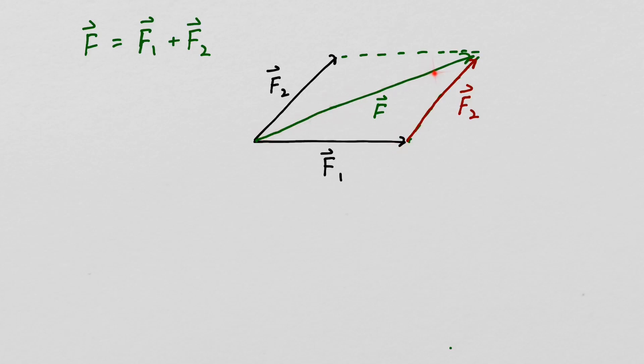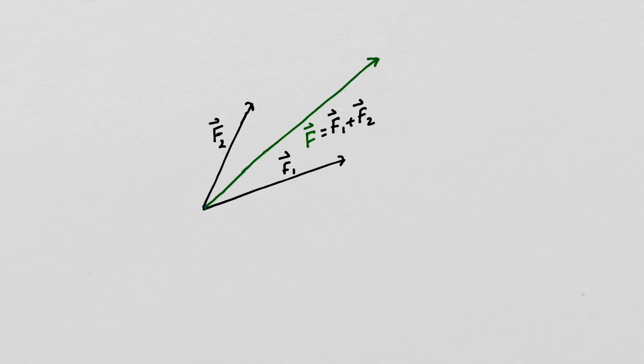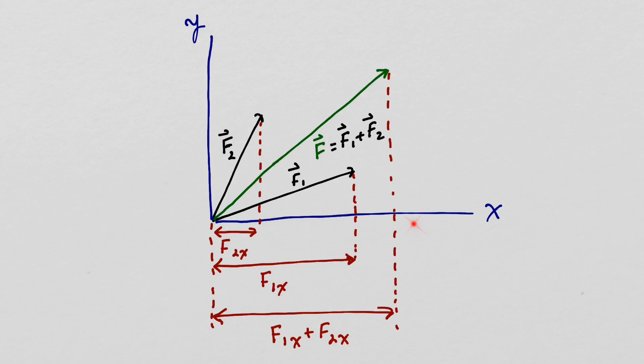Now that we know how to graphically add two vectors, let's look at how we would mathematically add two vectors. Here we have our xy coordinate system. So this distance right here will be the x component of F sub 2. This distance will be the x component of F sub 1. And this distance will be the x component of our vector F, which is the sum of vectors F1 and F2. So we see that the sum of the x components of F1 and F2 is the x component of our vector F.